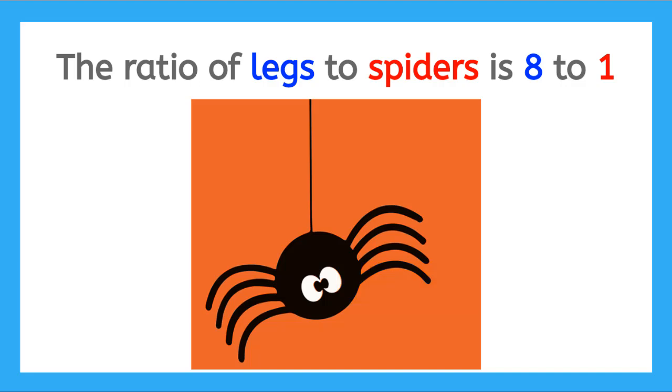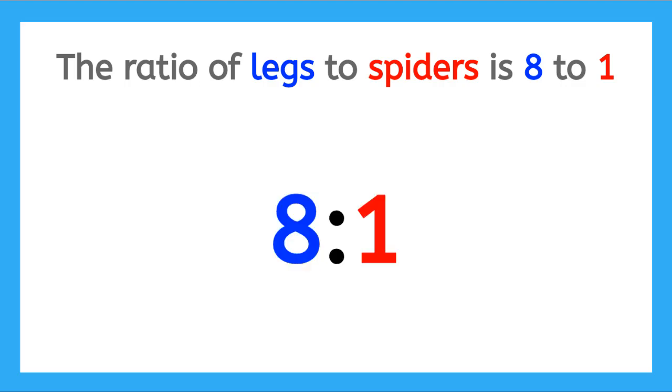There is another way to write ratios. It looks like this. Where we say two when we see the colon. It's important to note that the order you write a ratio is very super duper important.